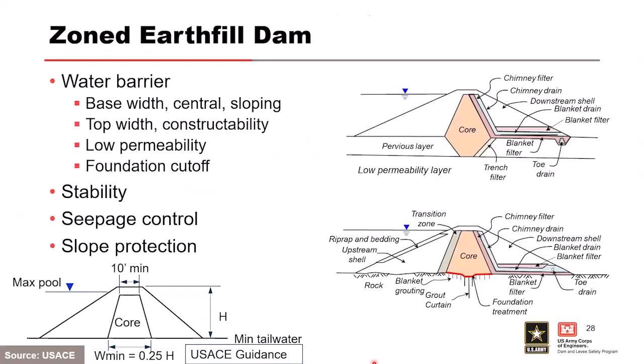Looking at typical cross sections: one on a soil foundation and one on rock. We've talked about chimney filters, drains, and blanket filters and drains. Depending on the gradation of your shell material, you may need a three-layer system — a sand blanket, then drain stone like half-inch passing, and then potentially a filter on top of that depending on the shell material gradation. On rock, you have a similar configuration but with blanket grouting.